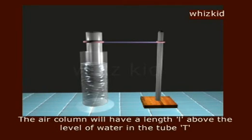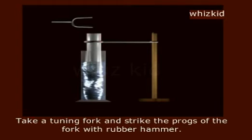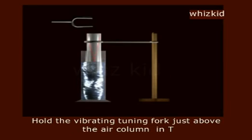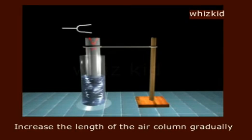The air column will have a length L above the level of the water in the tube T. Take a tuning fork and strike the prongs of the fork with a rubber hammer. Hold the vibrating tuning fork just above the air column in T. Increase the length of the air column gradually.